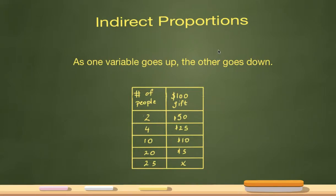Indirect proportions - as one variable goes up, the other goes down. What exactly does that mean? I have an example here. Let's take a look at this table. It's showing the number of people on the left column and a $100 gift.